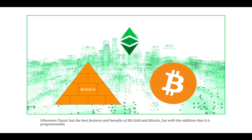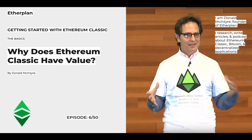As Bitcoin is considered digital gold, and Ethereum Classic's native currency has the same characteristics and benefits but is also programmable, then ETC can be called programmable digital gold. Ethereum Classic's unique characteristics make it an excellent environment for money, property, and agreements. In other words, ETC is the ultimate expression of all the properties of money combined with programmability. This is why Ethereum Classic has value. Thank you very much.